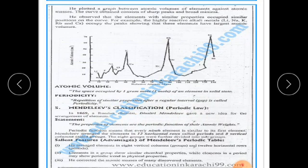We have studied Mendeleev's periodic table. He stated that the properties of elements are basically a periodic function of their atomic weights. Periodic function means every ninth element is similar to its first element — har ninth element jo hai wo similar hota hai first element ke saath.